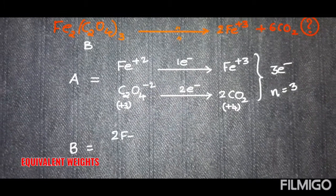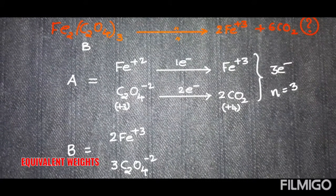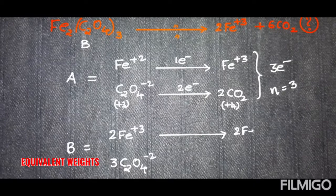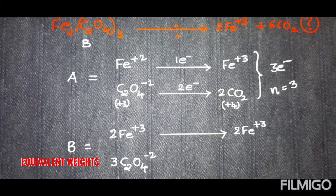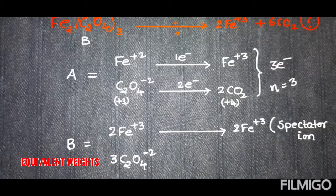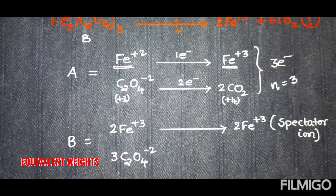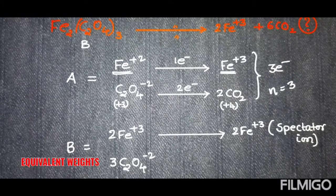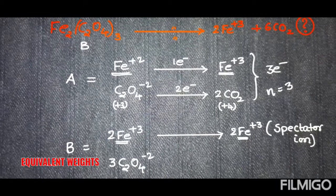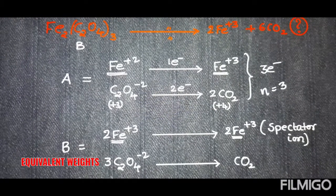Now taking molecule B, ferric oxalate, composed of two Fe³⁺ and three moles of C₂O₄²⁻. Observe that Fe³⁺ is present initially and also after the reaction — it does not change. Such ions are called spectator ions. So Fe³⁺ is a spectator ion here; unlike in molecule A where Fe²⁺ changed to Fe³⁺, there is no change in oxidation state for the cation in molecule B.